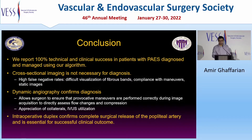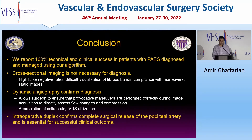We had seven out of nine extremities who had prior CTA or MRA, and seven out of nine were falsely negative. This is due to the difficult visualization of these encasing fibrous bands or small muscular slips, patient compliance with maneuvers, as well as the fact that these are static images.